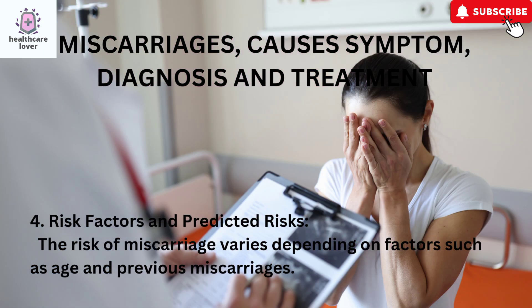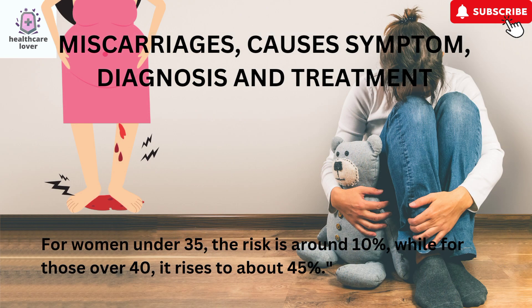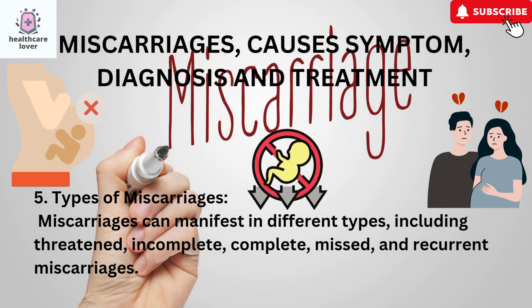Risk Factors and Predicted Risks. The risk of miscarriage varies depending on factors such as age and previous miscarriages. For women under 35, the risk is around 10%, while for those over 40, it rises to about 45%.